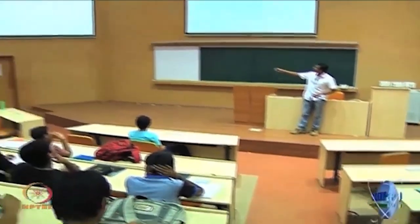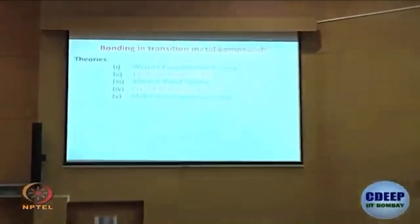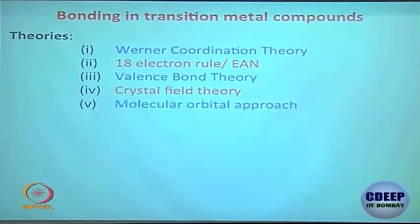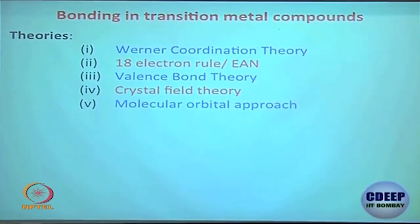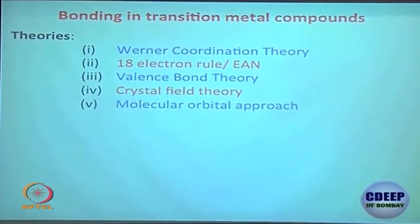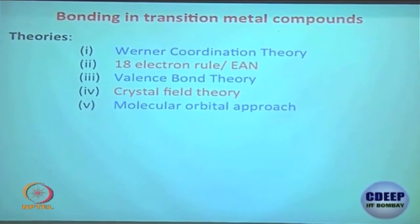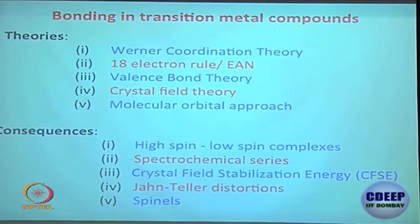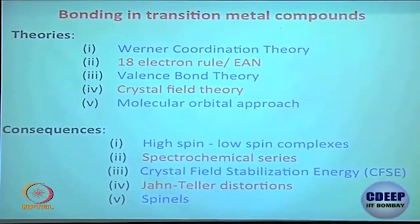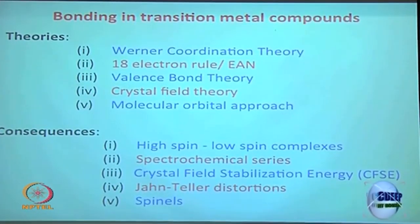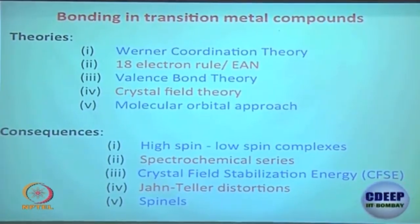In the last class we were discussing Werner coordination theory, the 18-electron rule, valence bond theory — how good it is and how limited it is — and then crystal field theory. We will stop at crystal field theory and not go too deeply into the molecular orbital (MO) approach. The major objectives for this chapter and the next are: high spin and low spin complexes, the spectrochemical series, crystal field stabilization energy, Jahn-Teller distortion, and spinels — the last two topics we will discuss today.